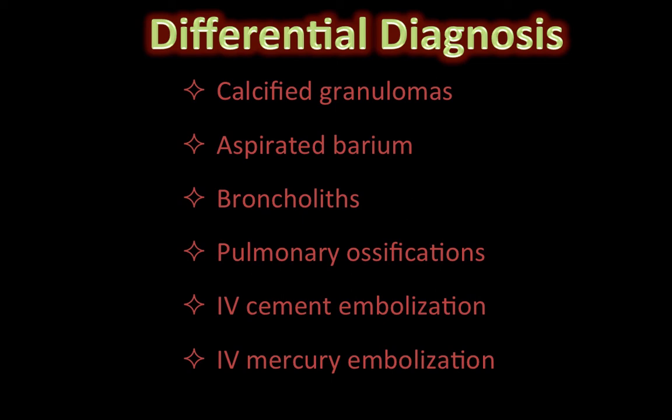The other possibility is that of intravenous mercury embolization. This could happen either accidentally or by intention, usually seen after injection of mercury as a suicidal attempt. Mercury has a very high metallic-like density and is typically seen in the lower lungs due to the effect of gravitation.